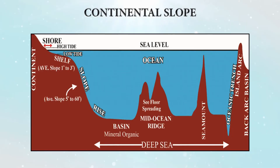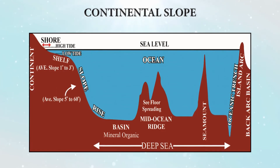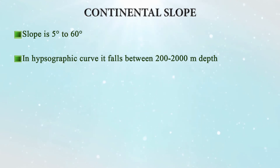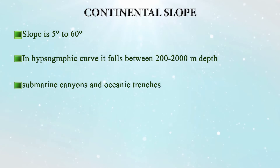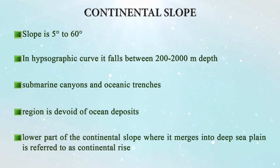Coming to the continental slope — the slope increases greatly beyond the shelf area, ranging between 5 to 60 degrees, and in the hypsographic curve it falls between 200 to 2000 meters depth. Relief features found here include submarine canyons and oceanic trenches. The continental slope is devoid of oceanic deposits because the high slope prevents accumulation. Whatever material falls from the slope accumulates at its lower part where it merges with the deep sea plain — this area is called the continental rise, which is a major deposition zone.